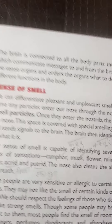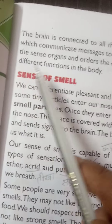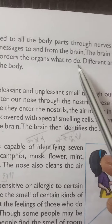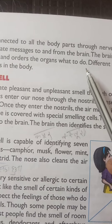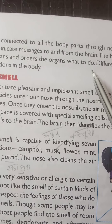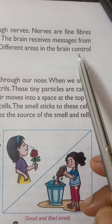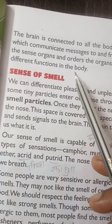The brain receives messages from the sense organs and orders the organs what to do. Different areas in the brain control different functions in the body.